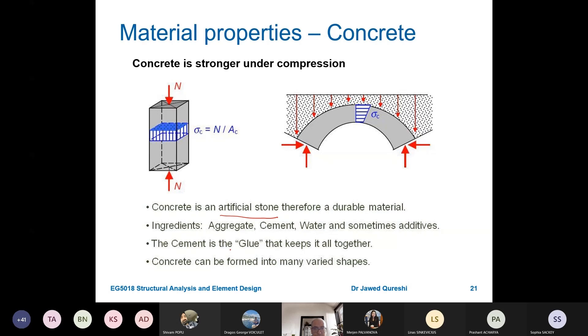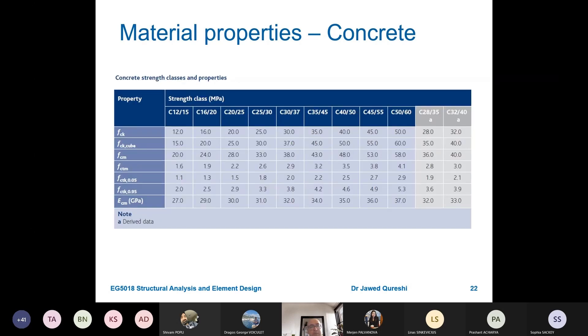The cement is a kind of glue that keeps the concrete together. This is the table which shows different grades of concrete, and the most common ones are the C25 and the C30 concrete. The first bit shows the cylindrical strength and the second bit gives you fck, the specified compressive strength.